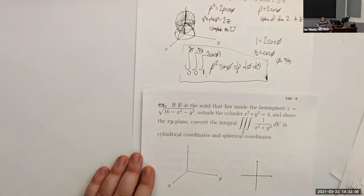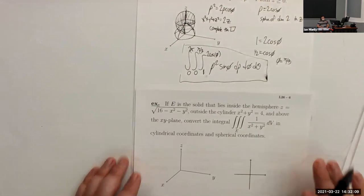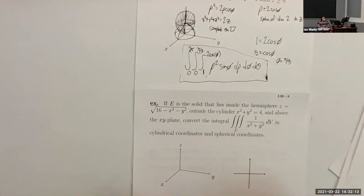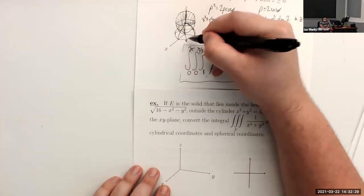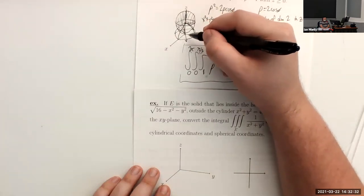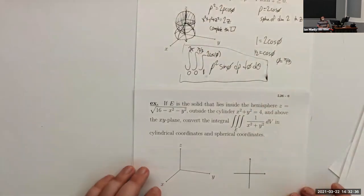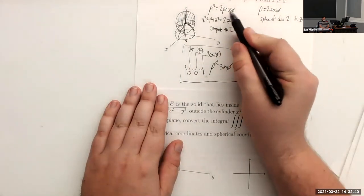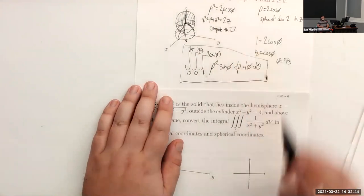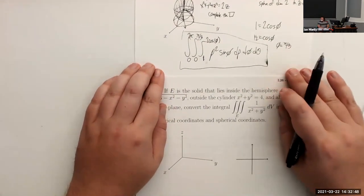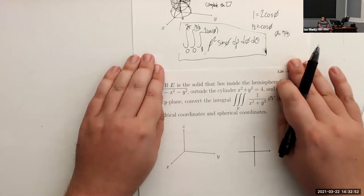For the bounds: ρ goes from 1 (lower hemisphere) to 2cos(φ) (upper sphere). φ's lower bound comes from where the two surfaces intersect: setting ρ = 1 equal to ρ = 2cos(φ) gives cos(φ) = 1/2, so φ = π/3. So φ goes from 0 to π/3. θ goes from 0 to 2π. The integral is ∫₀²π ∫₀^(π/3) ∫₁^(2cos(φ)) ρ²sin(φ) dρ dφ dθ.